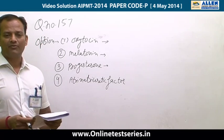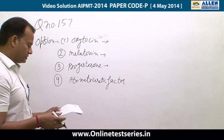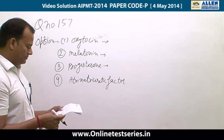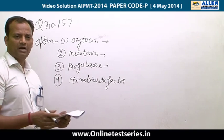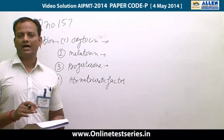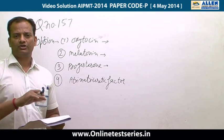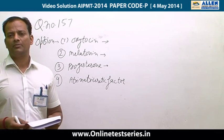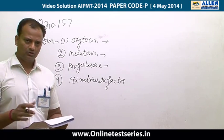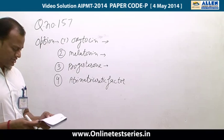Second option — melatonin from the pineal gland regulates the normal rhythm of the sleep-wake cycle. This option is correct because melatonin is released by the pineal gland and is related to diurnal variation and the sleep-wake cycle.